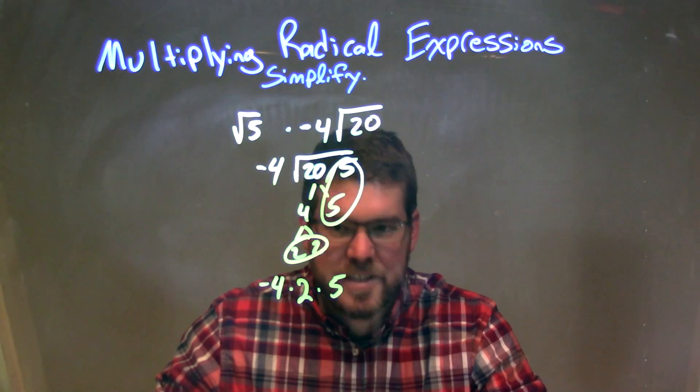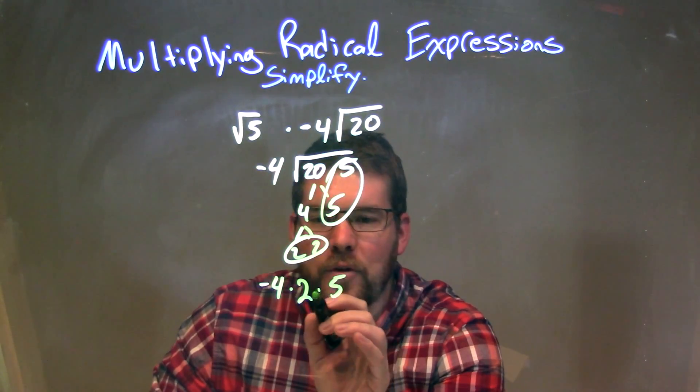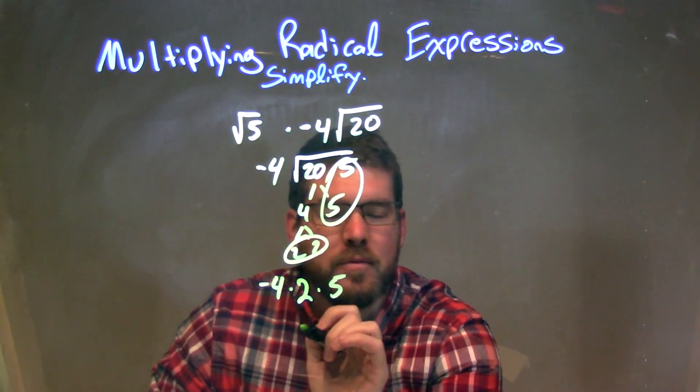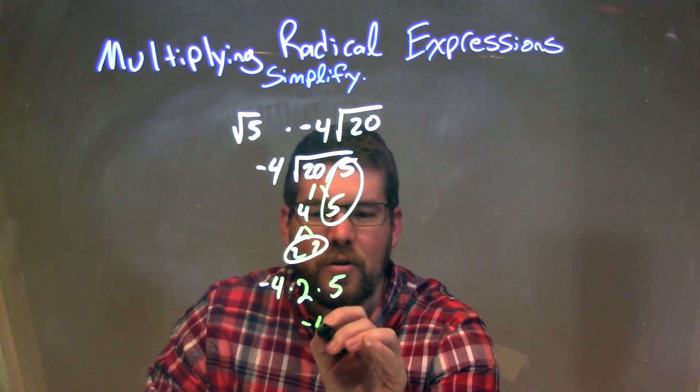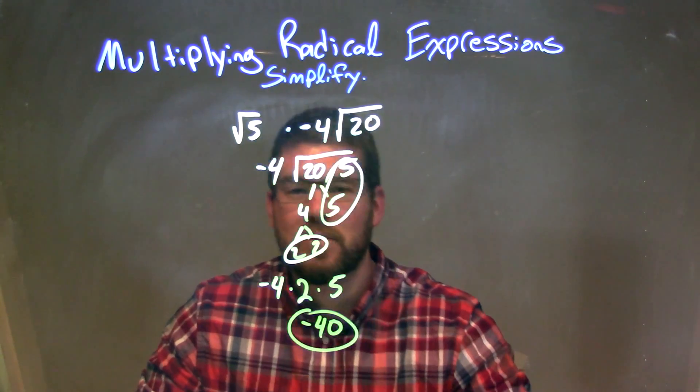We're done. It kind of disappears there. So now we have 2 times 5 is 10, times negative 4 is negative 40. And so our final answer here is just negative 40. That's what this simplified to be.